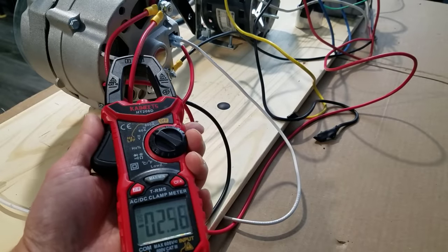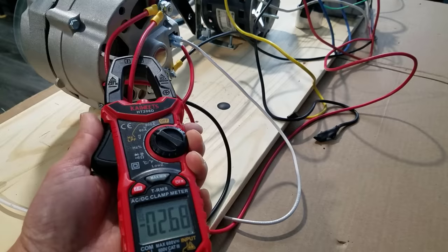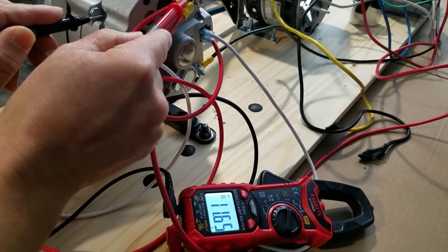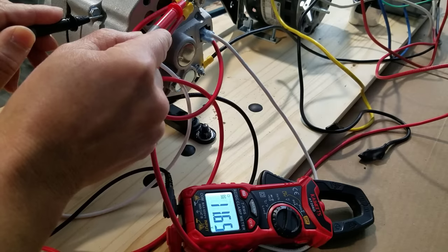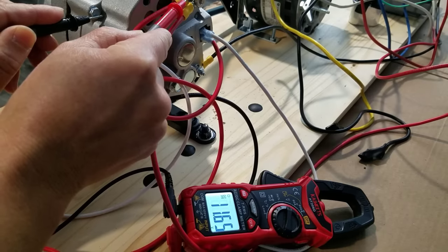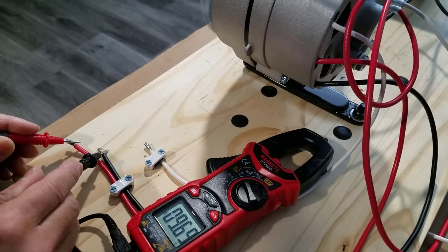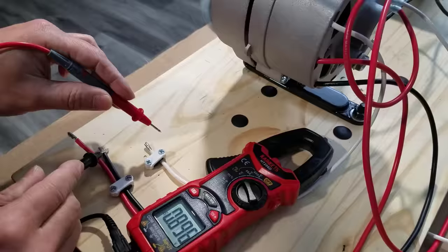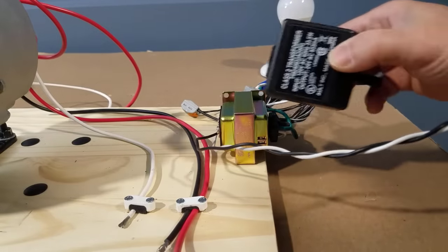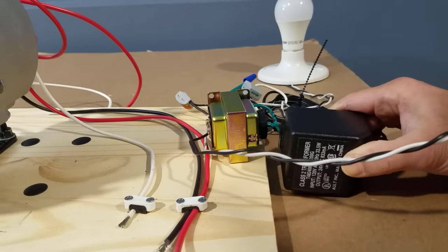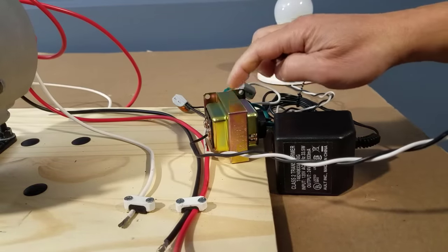The alternator puts out about 2.7 amps with 11.65 volt DC, which is too low to keep the battery charged. The alternator puts out about 9.7 volts AC. 9 volts AC is not enough to run an appliance, but we probably could turn on a light bulb and light up the room.